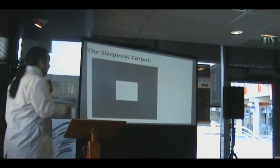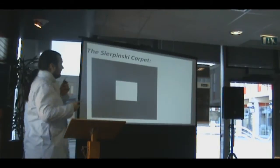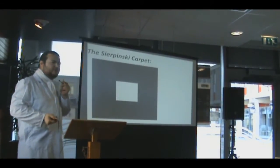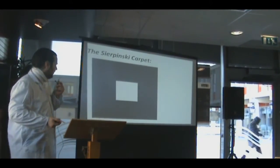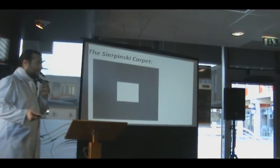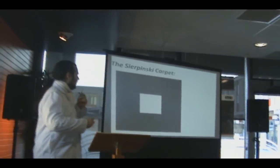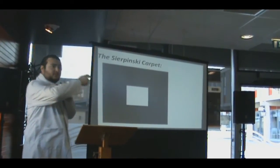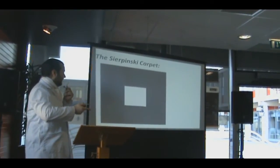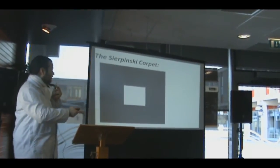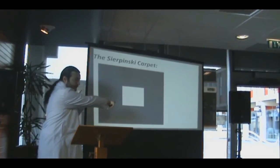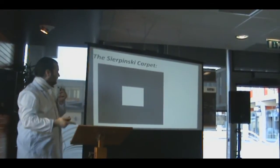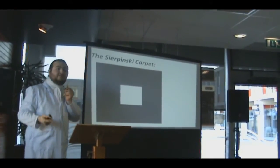For example, here is a famous fractal called the Sierpinski Carpet, first described in the 1920s by the Polish mathematician Wacław Sierpiński. The idea is it starts with a square, and in the middle of the square you put a square hole in it, which is a third of the width, a third of the length, and a ninth of the area.